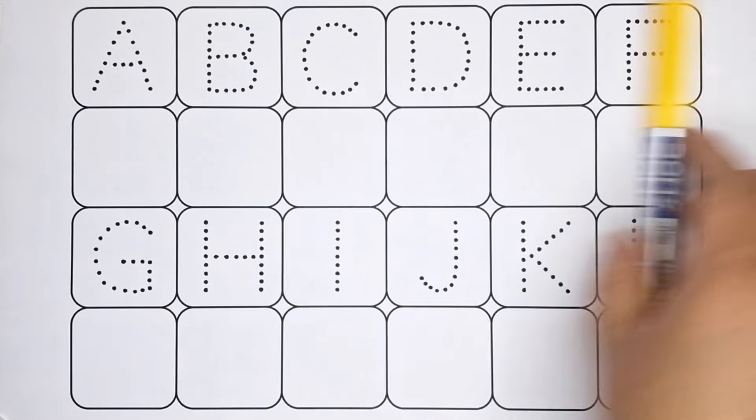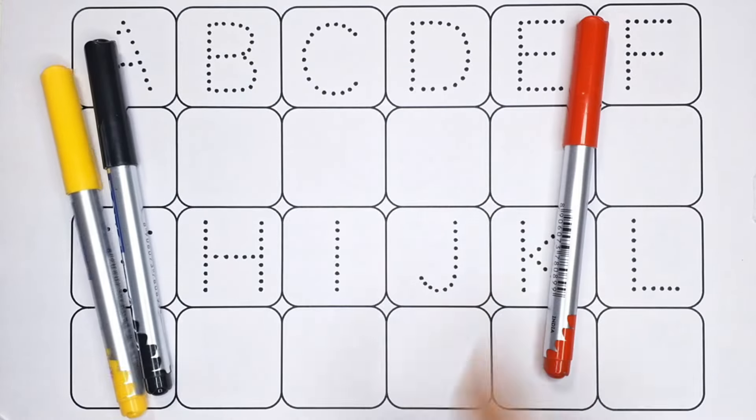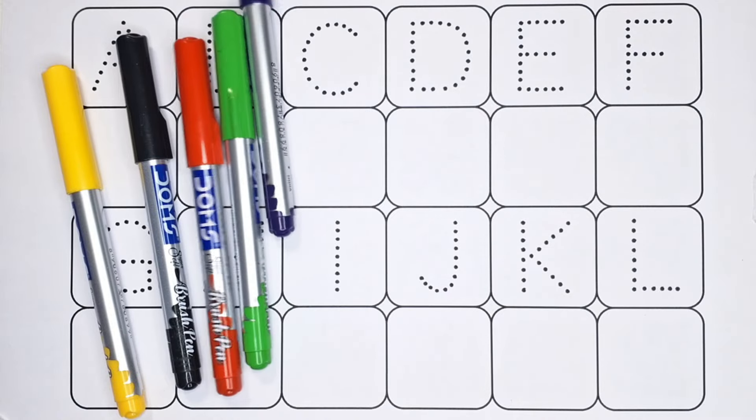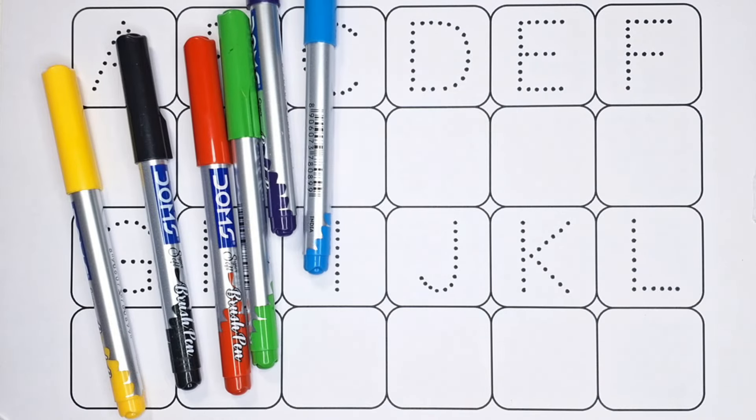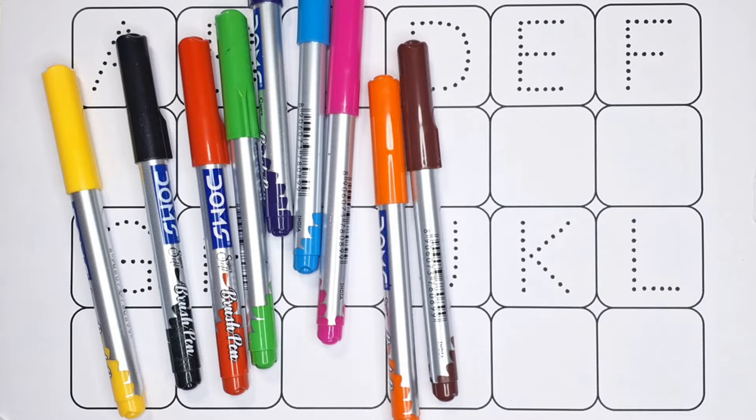Hello kids, let's learn color names: yellow color, black color, red color, green color, purple color, sky blue color, pink color, orange color, brown color.